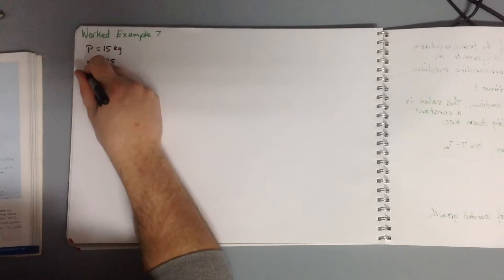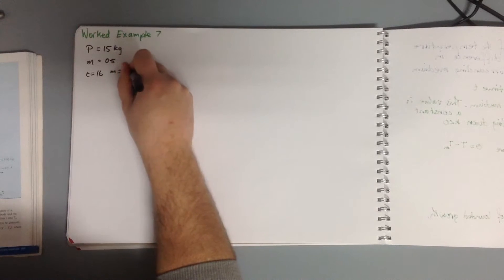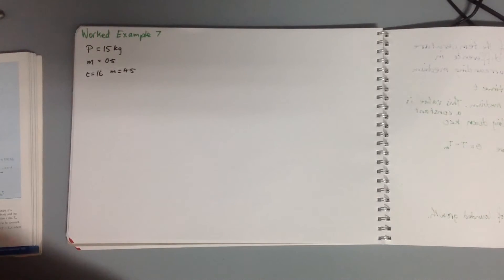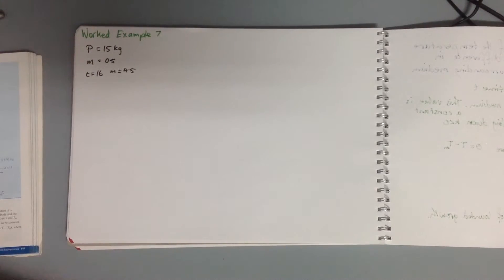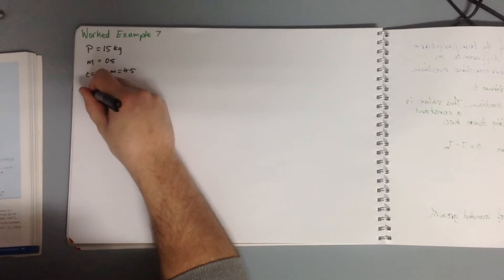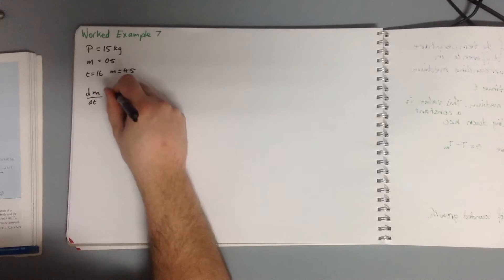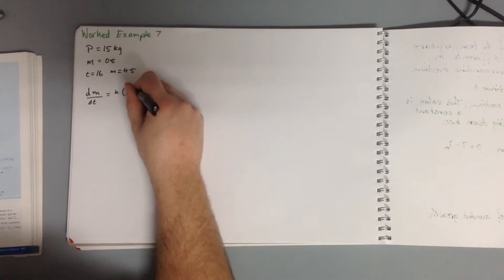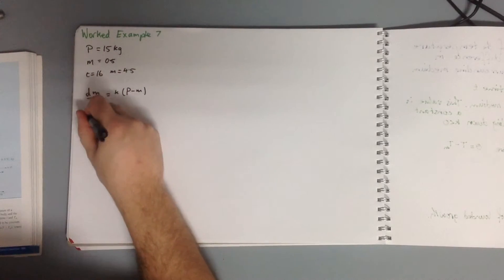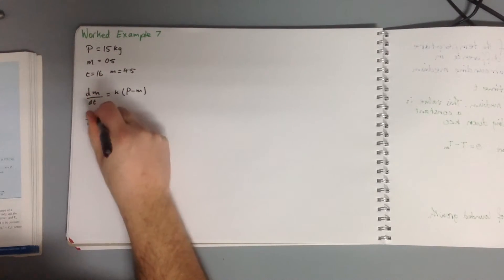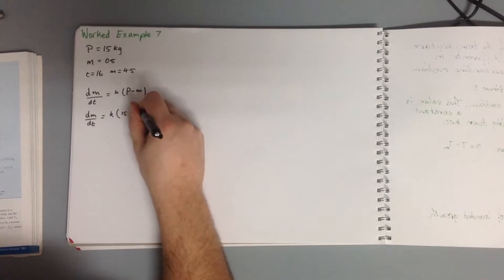We know when T equals 16, M equals 4.5. M is our mass and T is our time in weeks. So we can write our differential equation: dM/dT equals K times (P minus M), which becomes dM/dT equals K times (15 minus M).